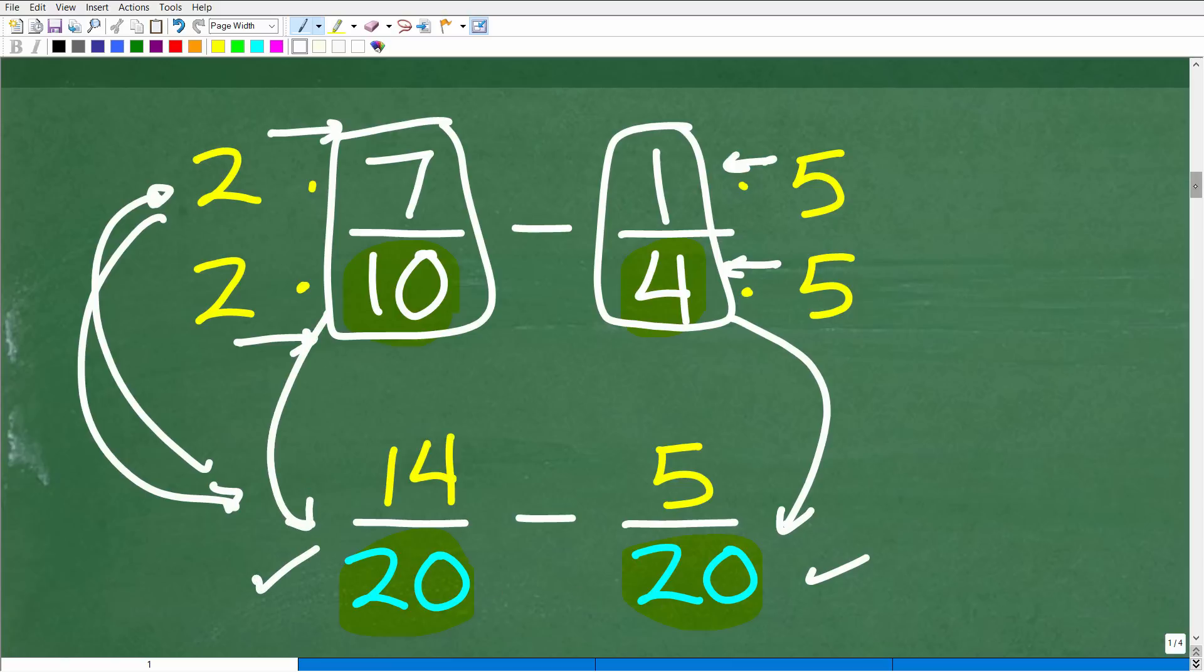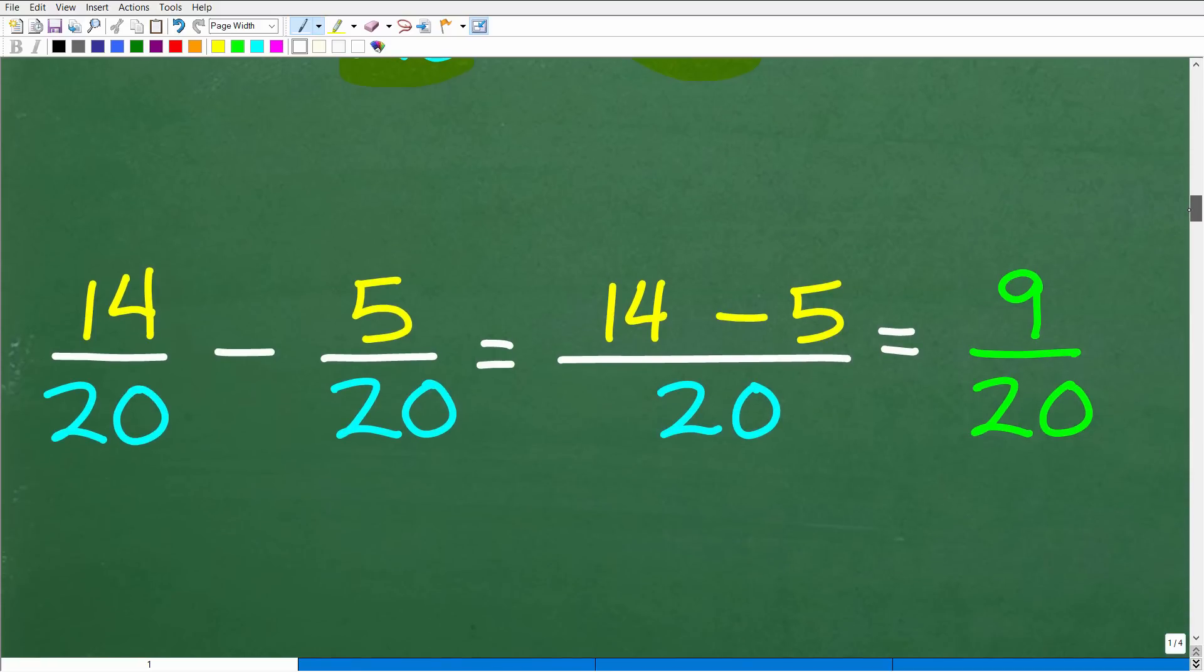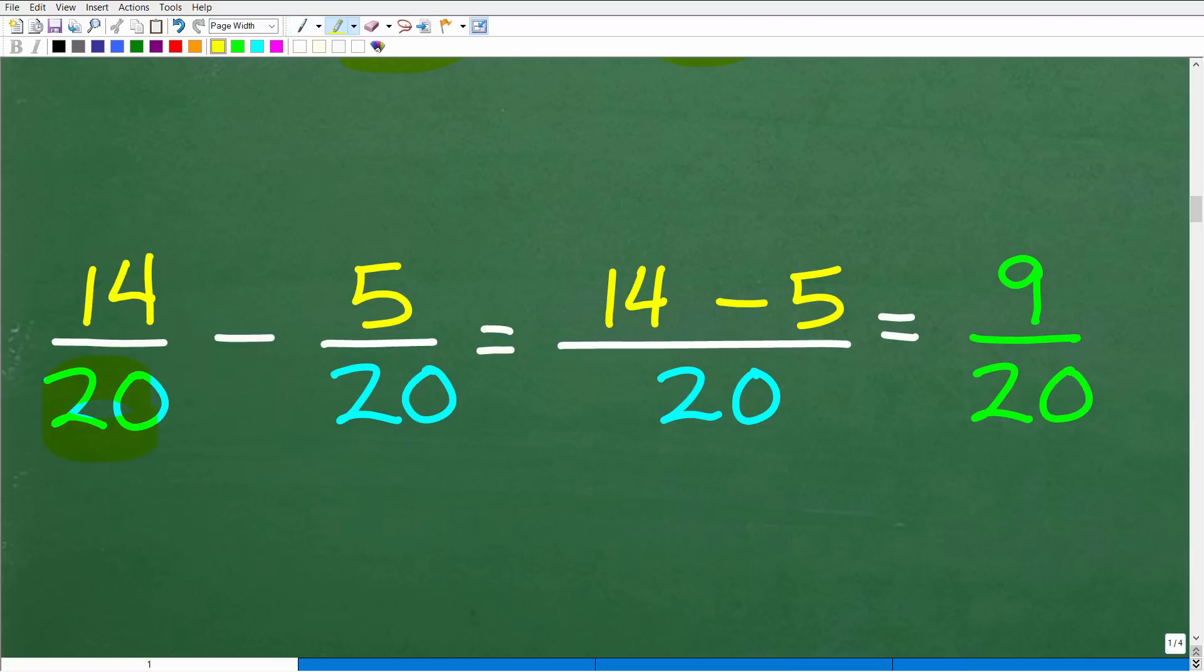Now this is going to become nice and easy. How do we subtract fractions when we have the same denominator? Easy, we just write that denominator and we subtract the numerator. So this is going to be 14 minus 5.